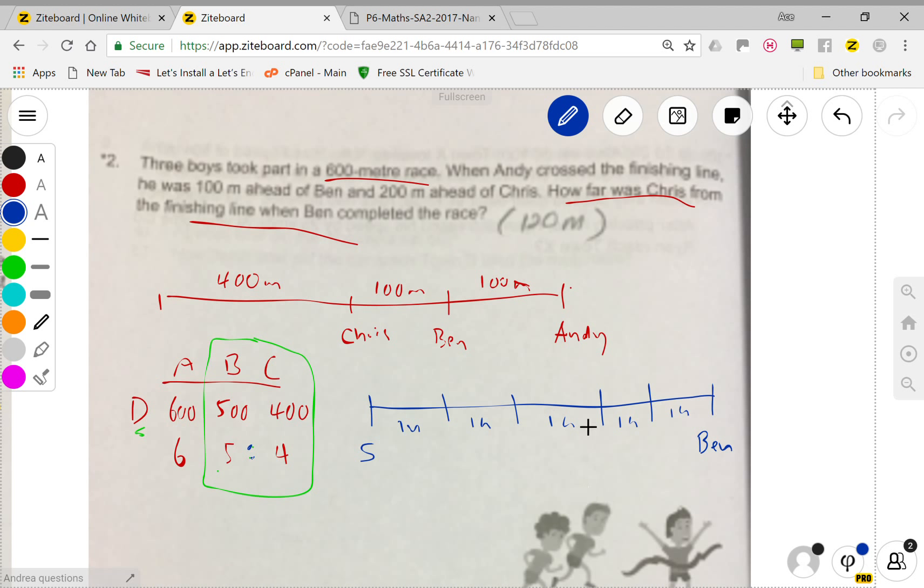When Ben finishes 5 units, where is Chris? The clue is we look at this. Chris is here. When Ben finishes 5, C will only finish 4.